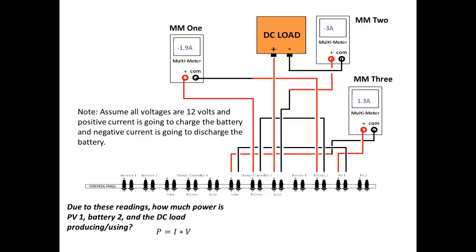In this case, we know that all voltages are 12 volts, and negative current is going to discharge the battery. Since this is the case, we know that the load current is always going to be negative, or using power, and the PV1 current is always going to be positive because it is charging the battery.